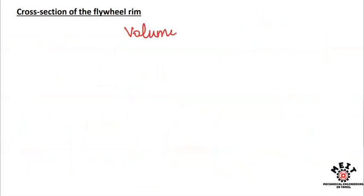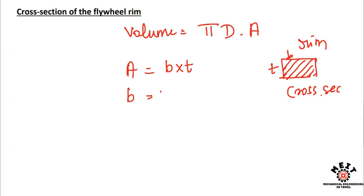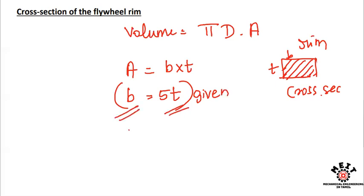For the cross-section of the flywheel, volume equals π times d times area. The cross-section area is b times t, which is a rectangular cross-section. Since width b equals 5 times thickness t, the area equals 5t squared.